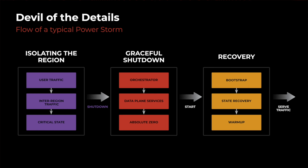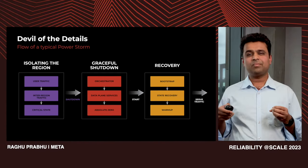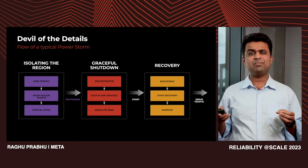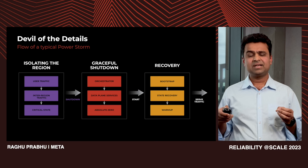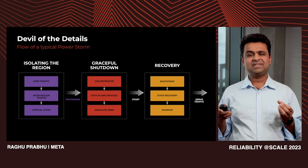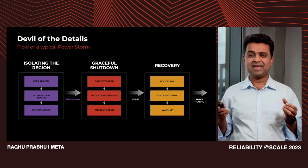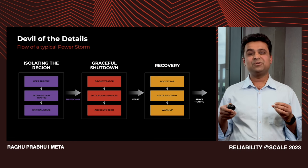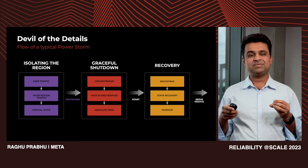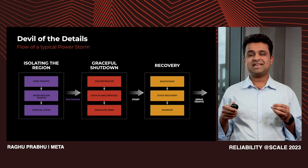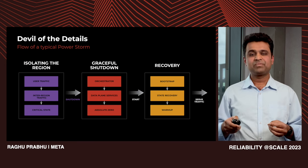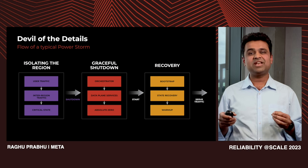And finally, recovery — which involves bootstrapping the regional orchestrator, and once stable, starting data plane services and kicking off their recovery. Recovery involves warming up of various caches, replication catch-up, and any other full or incremental state transfers. Once the region is healthy, we re-enable the WIPs and the region starts serving traffic again. It's important to note that while this can be tested in a small or test region, exercising in production at scale is key once sufficient confidence has been achieved.